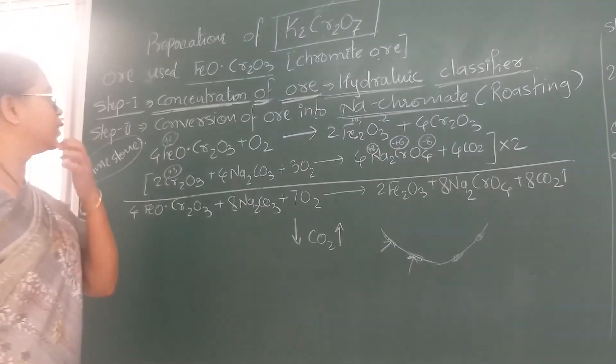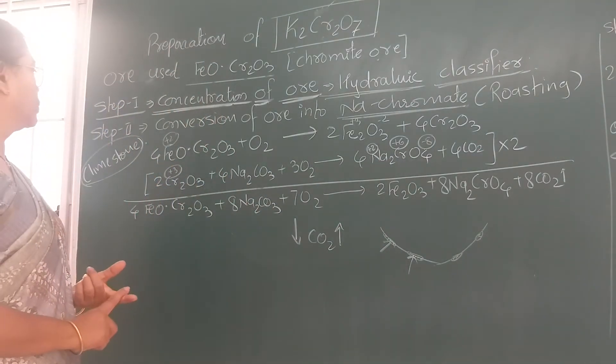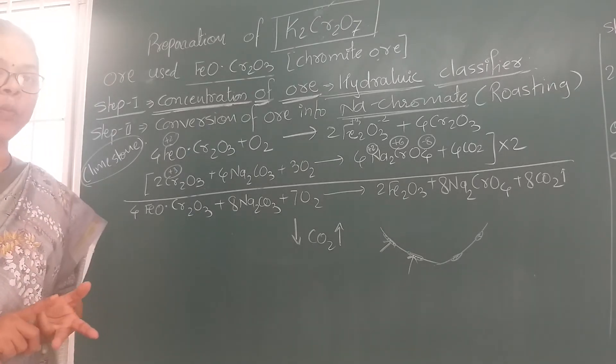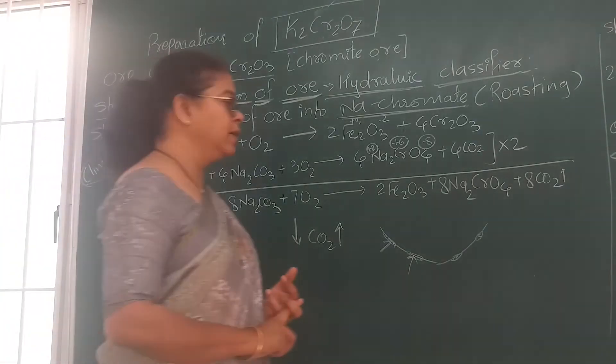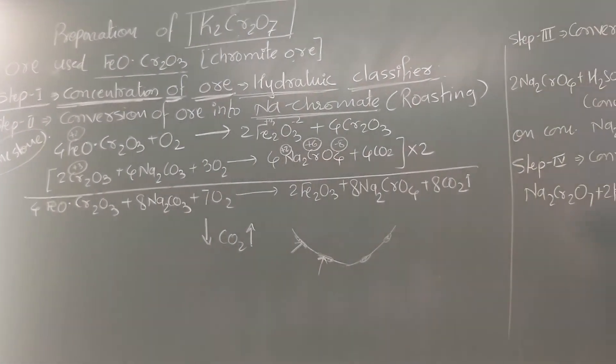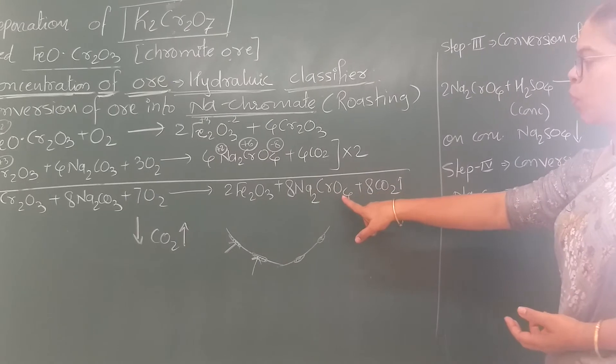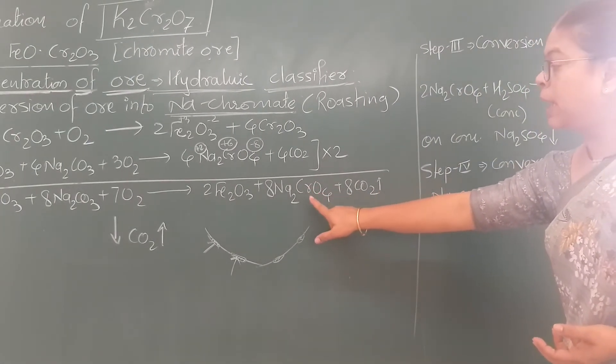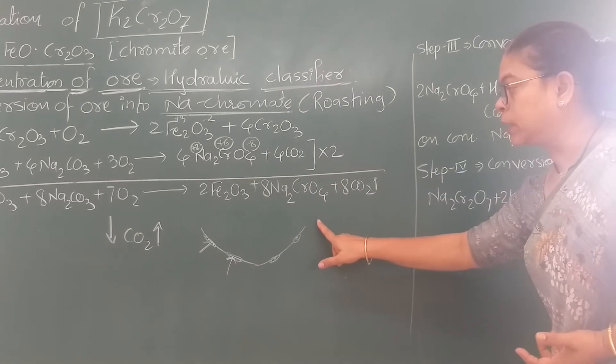First step is concentration of ore. Second step is conversion of ore into sodium chromate, the process is roasting. Sodium chromate is now prepared with chromium in plus 6 oxidation state.